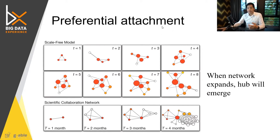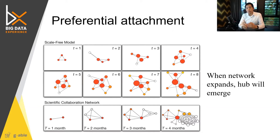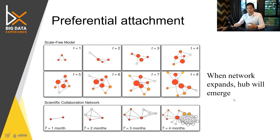That is, if you have a new node coming in, it would preferably attach to the popular nodes. And when the network grows, the hub would emerge.